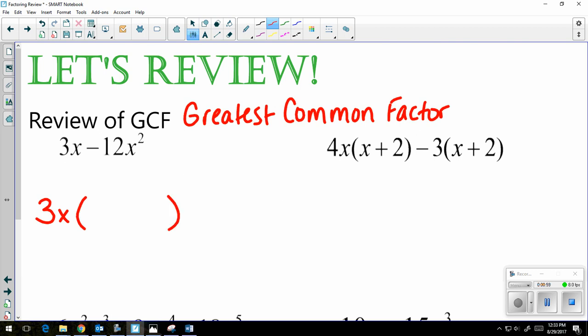Now remember that when you are factoring, you're essentially dividing. So I am really dividing each of these pieces by 3x. So 3x divided by 3x, anything divided by itself, is going to give you 1.